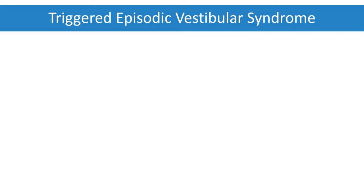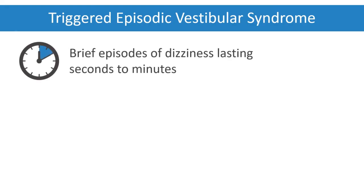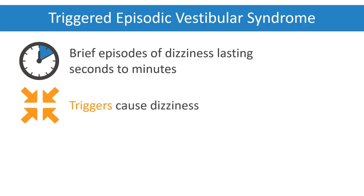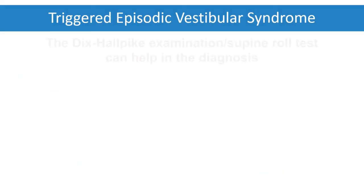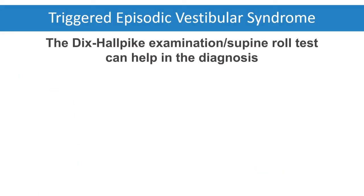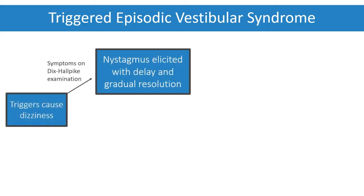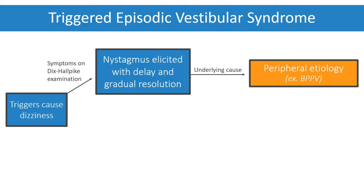Triggered episodic vestibular syndrome has brief episodes of dizziness lasting seconds to minutes, with triggers causing dizziness not present at baseline. The most common causes are benign paroxysmal positional vertigo and orthostatic hypotension. The Dix-Hallpike examination and/or supine roll test can help in the diagnosis. Nystagmus elicited by the Dix-Hallpike test with a delayed onset of approximately 10 seconds or longer and gradually resolving indicates a peripheral etiology such as BPPV.